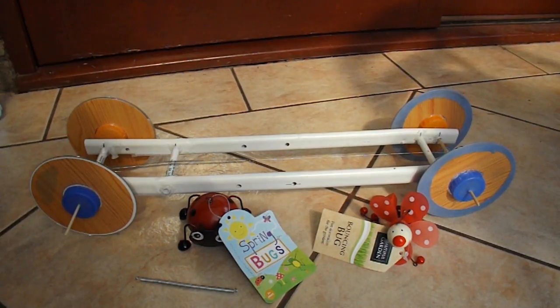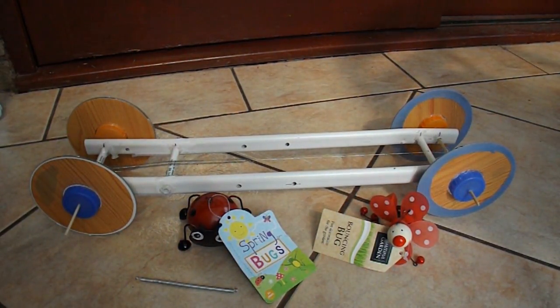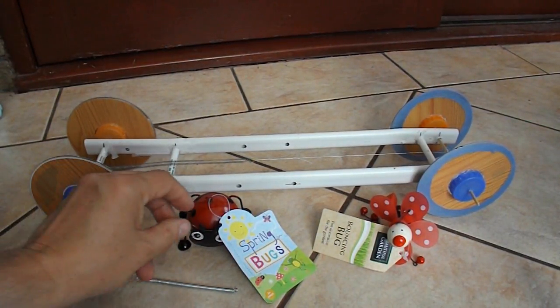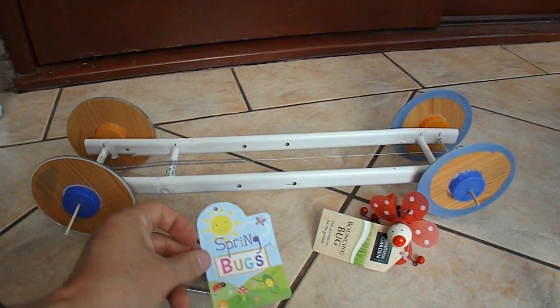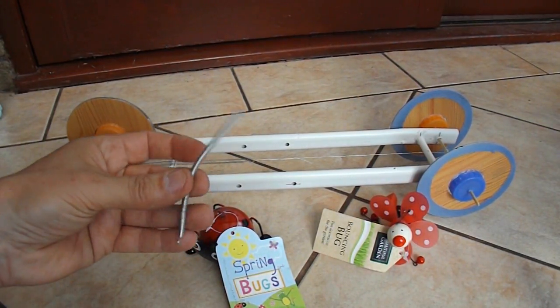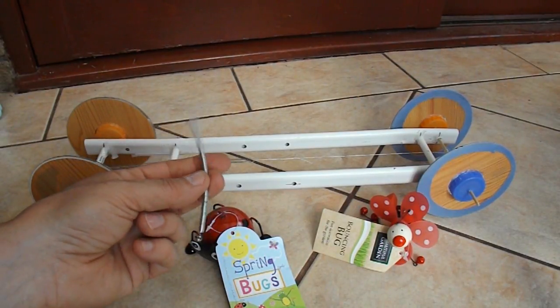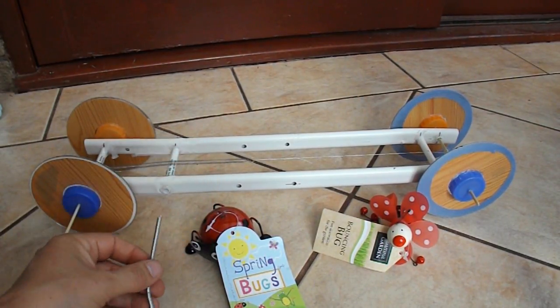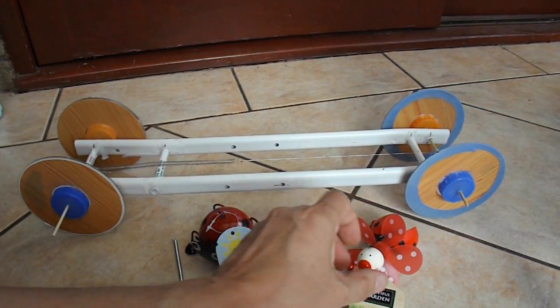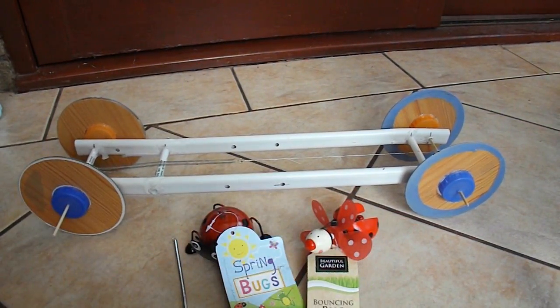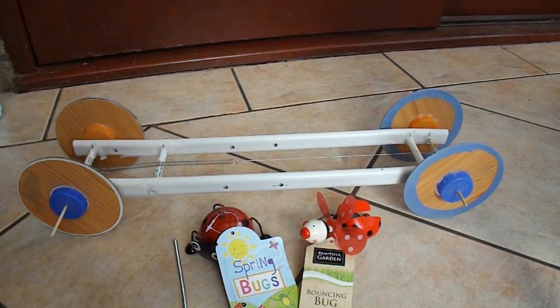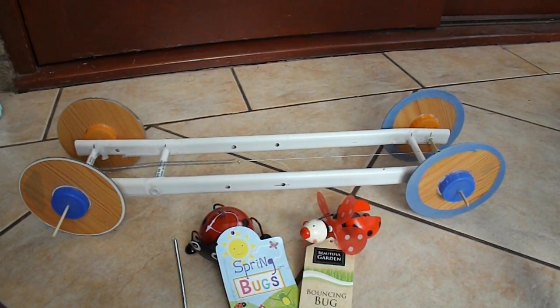So the other day I was in 99p store and I found this spring bug which had this spring on it, which is a nice flexible soft spring. And then I went next door which happens to be Poundland and found this bouncing bug which had a similar spring on it. So I thought well I'll buy them both and I'll try them out.